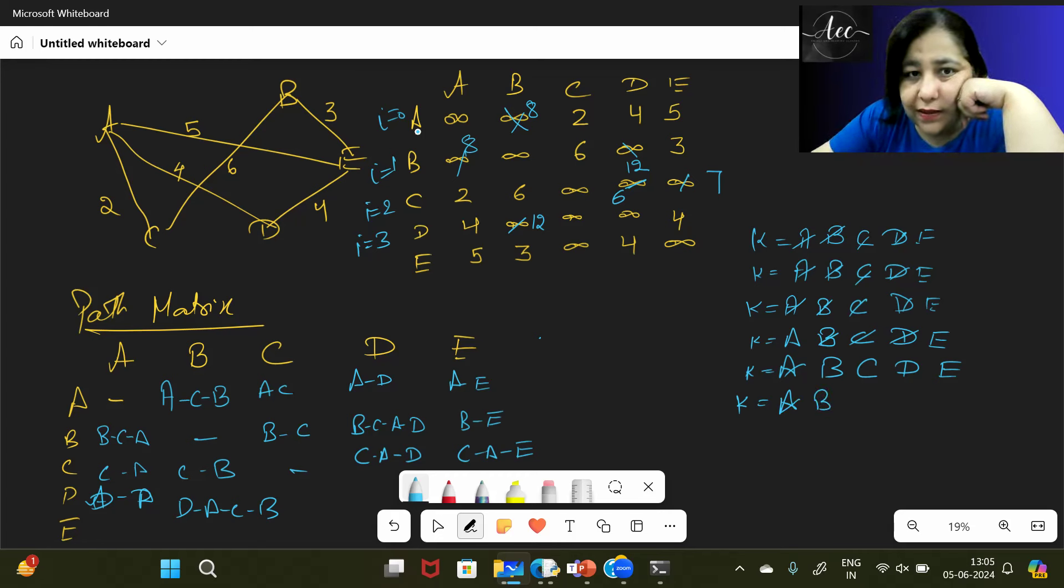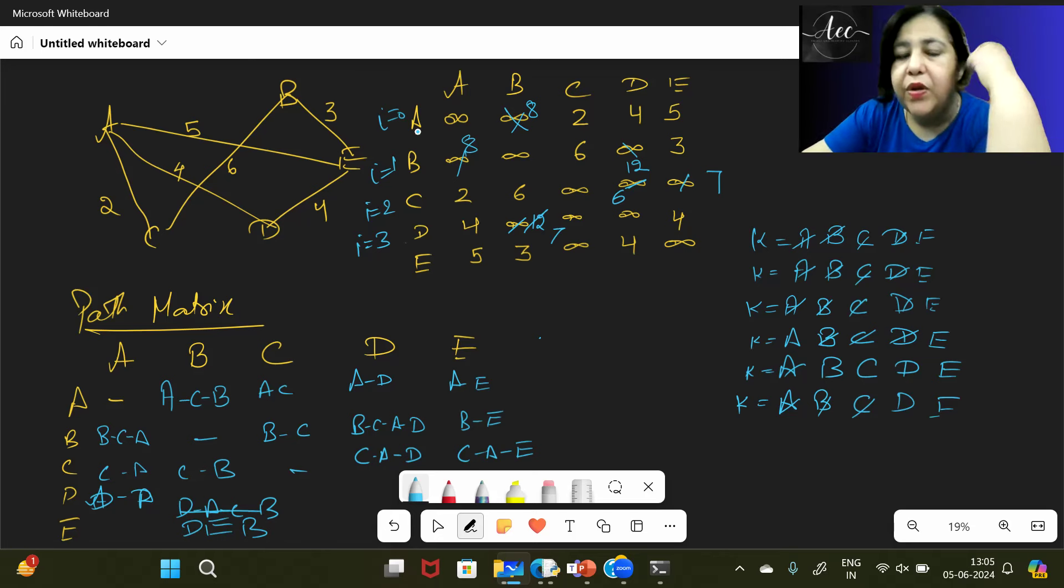But we will see other options, can we go through someone else? So to go D to B, B is the source, we won't take it. Then via C we see. D to C there is no path. We can't take it. D to D doesn't happen. D to E is 4. D to E is 4, and E to B is 3. So this became 7. So D to E is 4, and E to B is 3, which is 7, which is less than 12. So this 12 will change to 7. And here the path that comes will also change. Now this will be D, E, B. So now the path will be D, E, B. So this became 7.